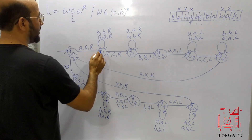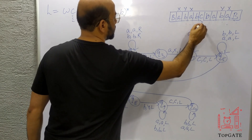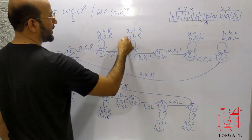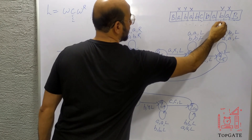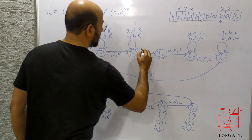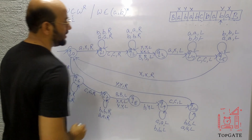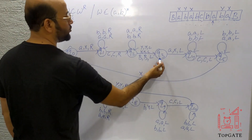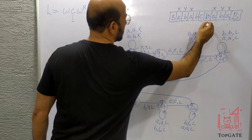At Q0, the machine finds A, changes it to X, and moves right, skipping B's to reach C. C is skipped and the pointer moves to B at Q2. At Q2, all B's and A's are skipped, but now the pointer reaches Y instead of a blank. So I need to add moves at Q2 for Y and X: if you find Y let it be Y go left; if you find X let it be X go left. The pointer takes a left turn and at Q3, the machine finds A and changes it to X, going left.